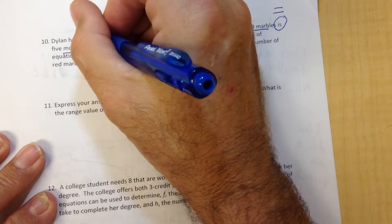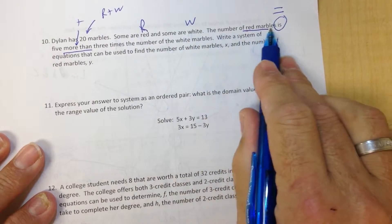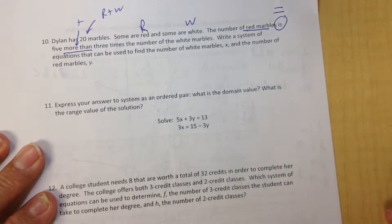Okay, and he has 20 marbles, doesn't he? So R plus W is 20. So this sentence has one equation, and the 20 marbles is the other.